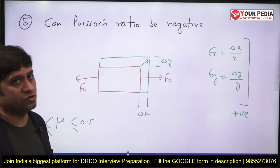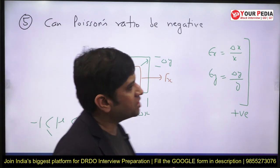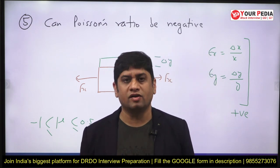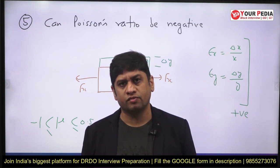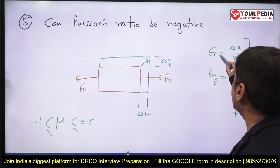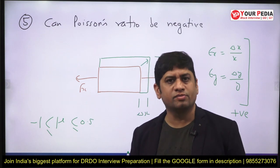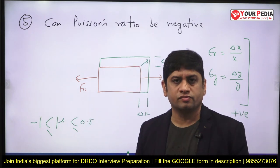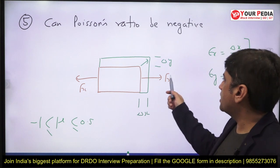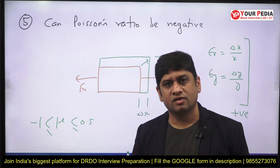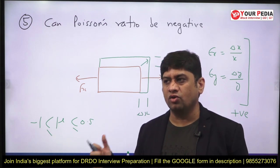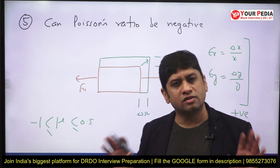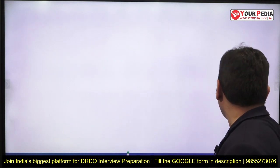If you answer this also, they will ask: what do you mean by a negative Poisson's ratio? The theoretical value of Poisson's ratio is minus 1 to 0.5, though for engineering materials it is positive. A negative value of Poisson's ratio means if epsilon x is positive, epsilon y is also positive — meaning if you stretch a body, it will not only elongate in the x direction but also in the y direction. Such materials are found in certain human tissues, which bloat in all directions. That is the only information you need to know.